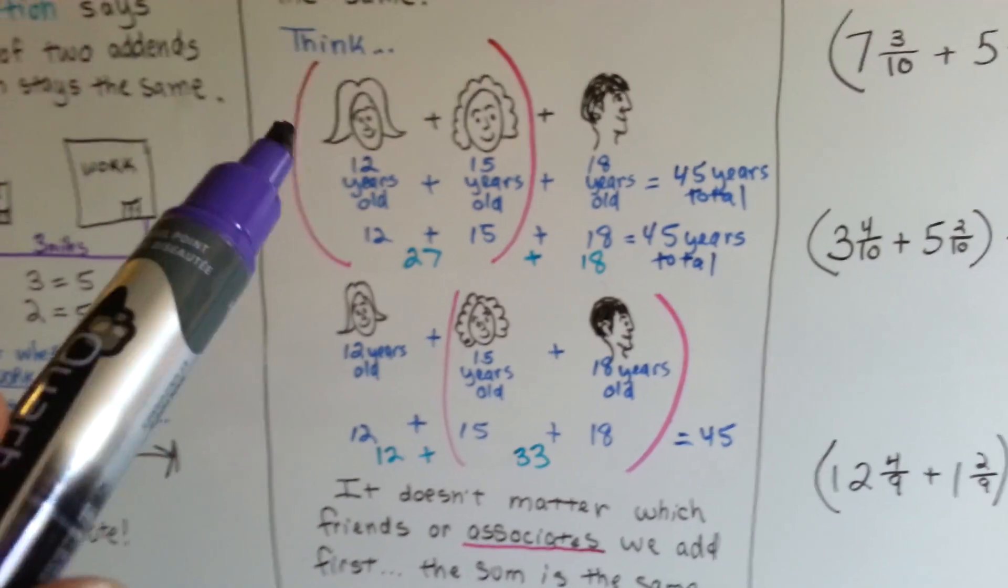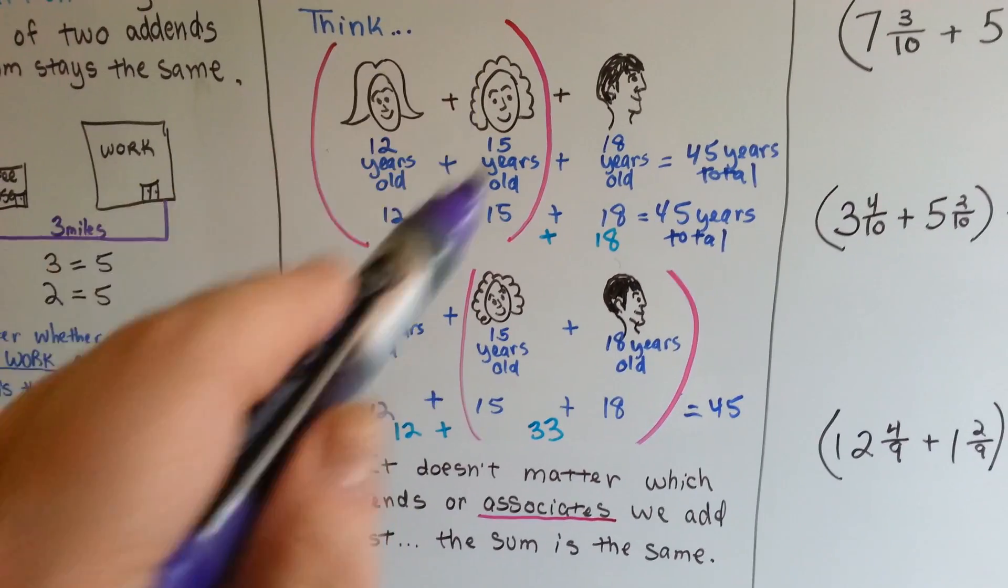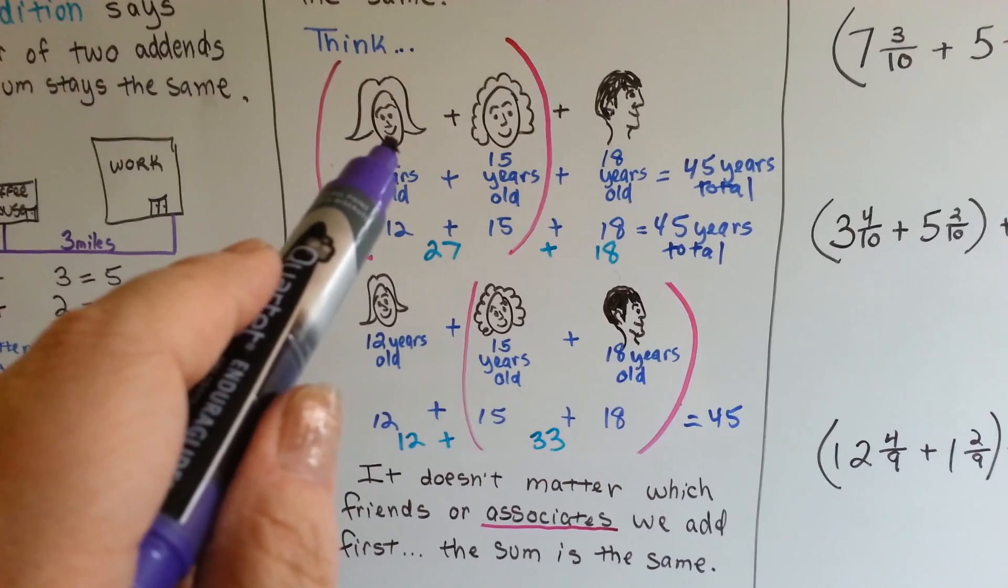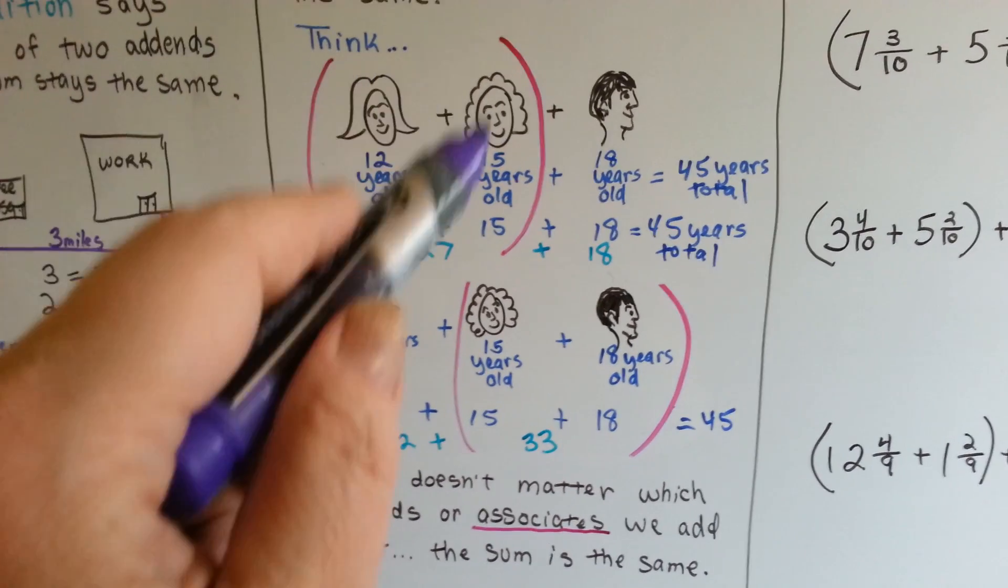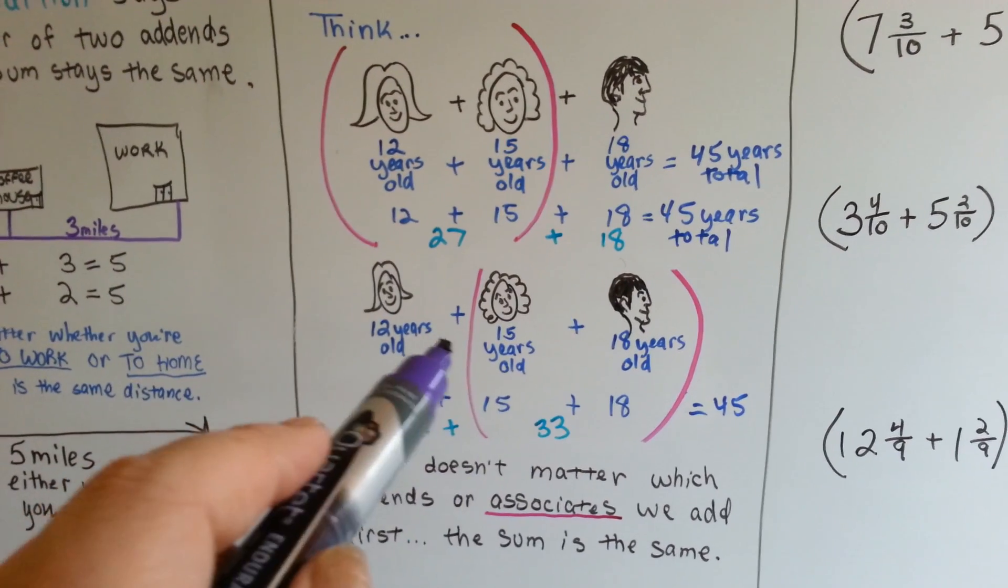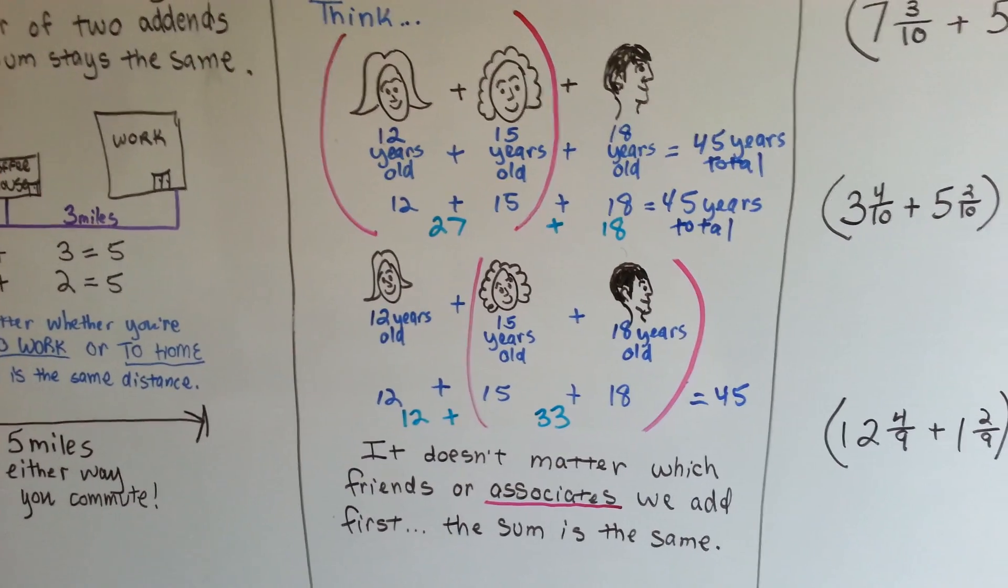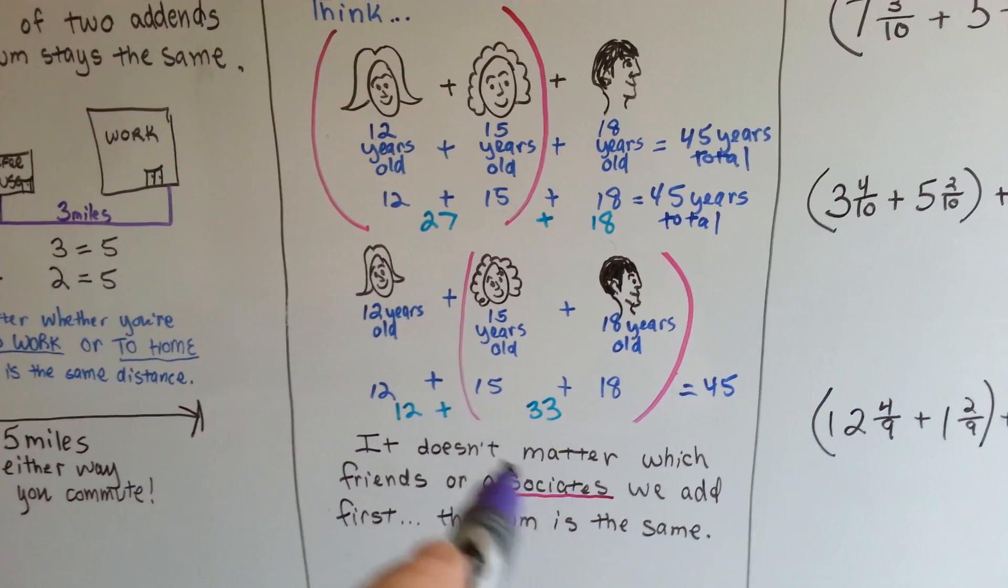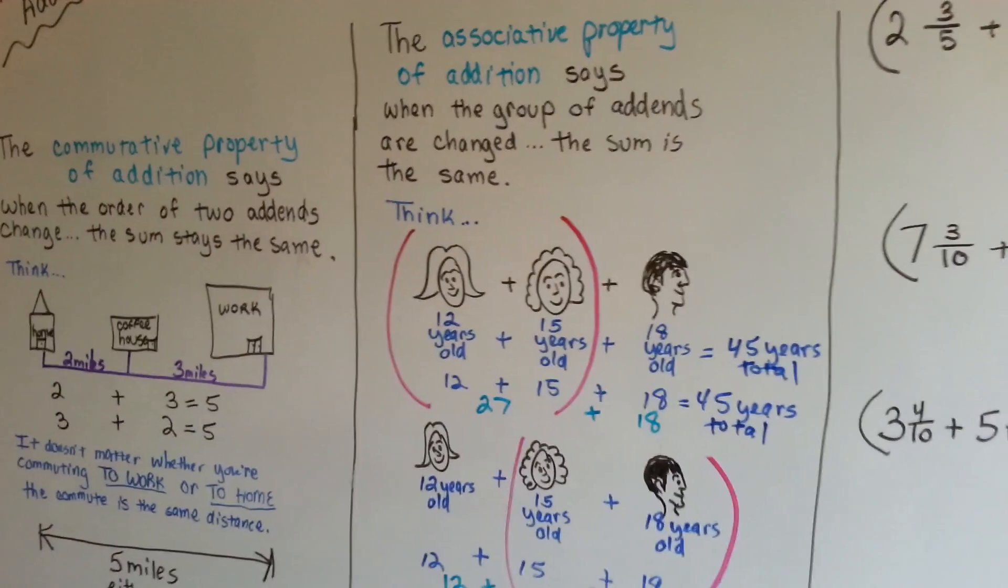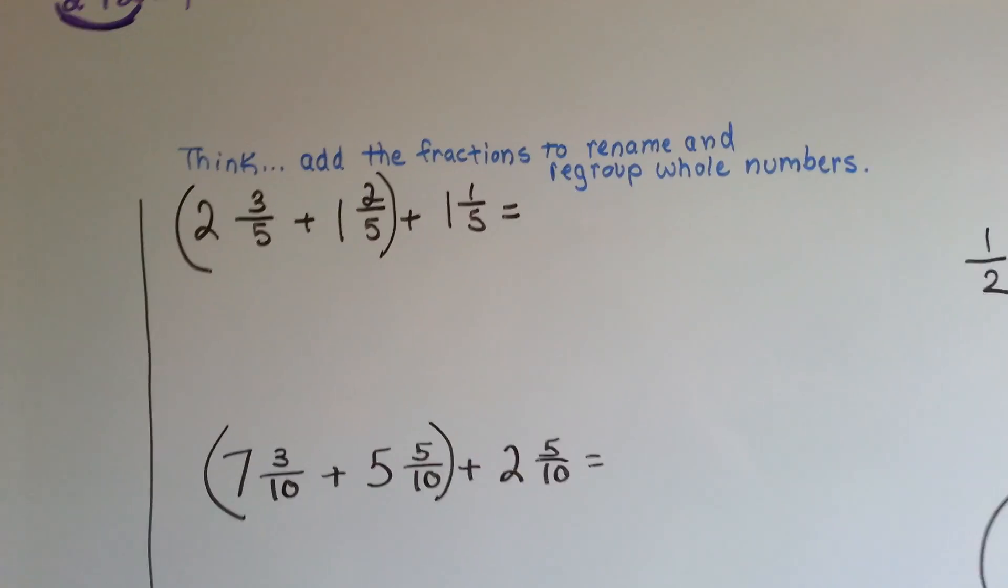When you want to remember the associative property, think of the associates that you go to school or work with, who you associate with, who you hang out with. It doesn't matter if you group the two girls and then add the guy's age, or if you group the guy and the girl and then add the other girl's age. It's still going to equal the same no matter who you associate together first. So those are the two properties that are going to help us group and order the addends.